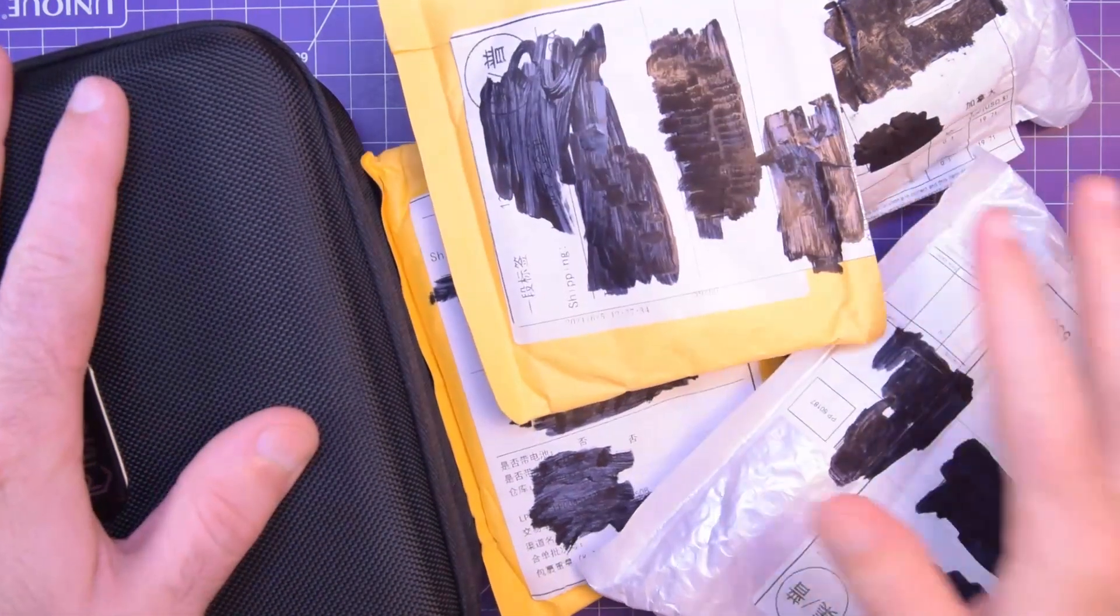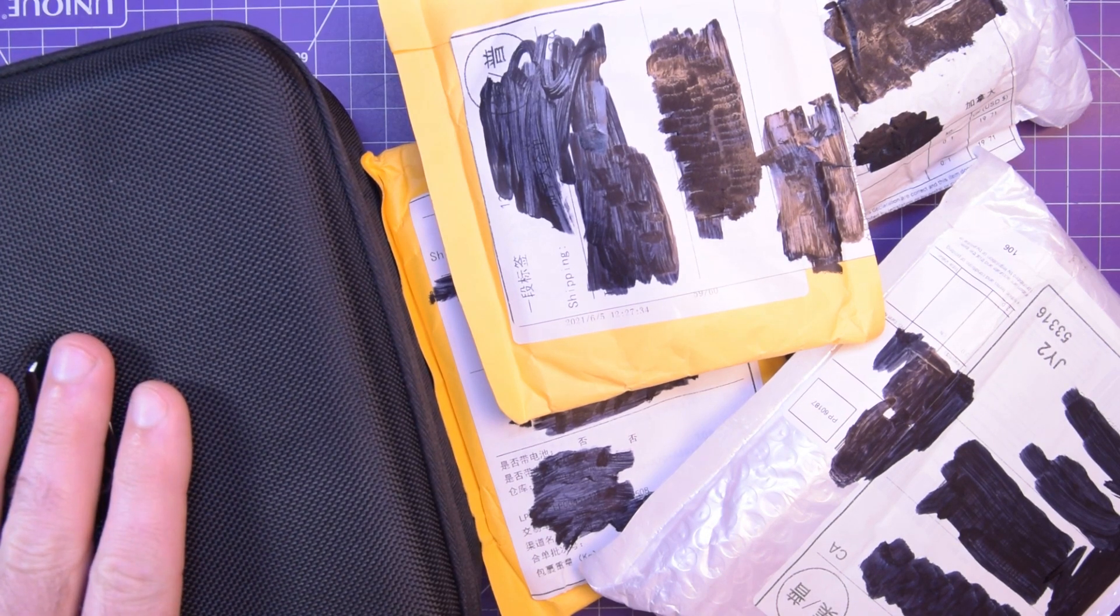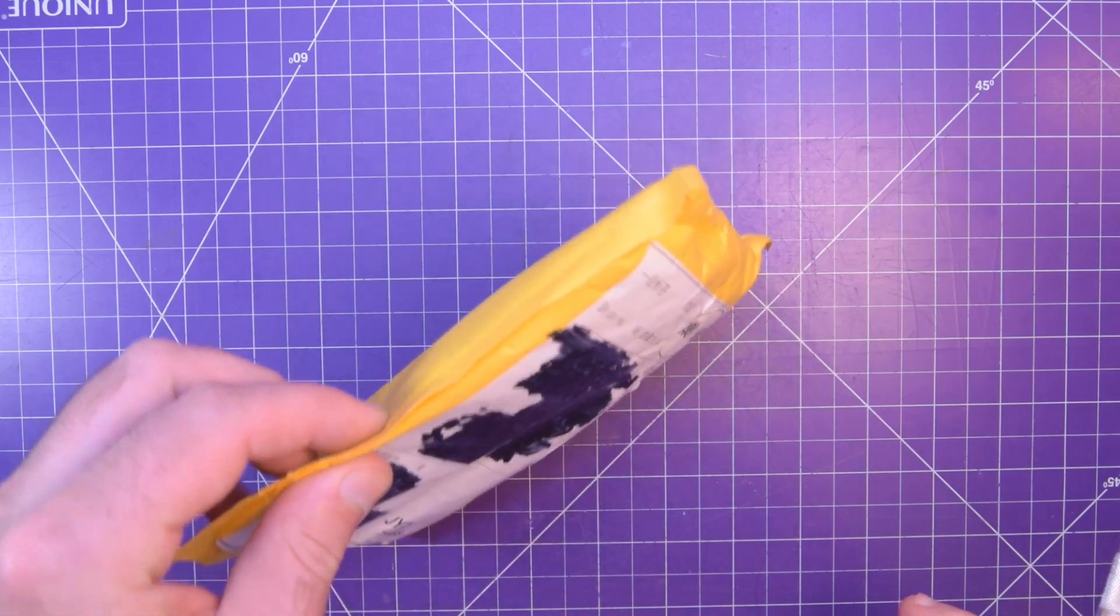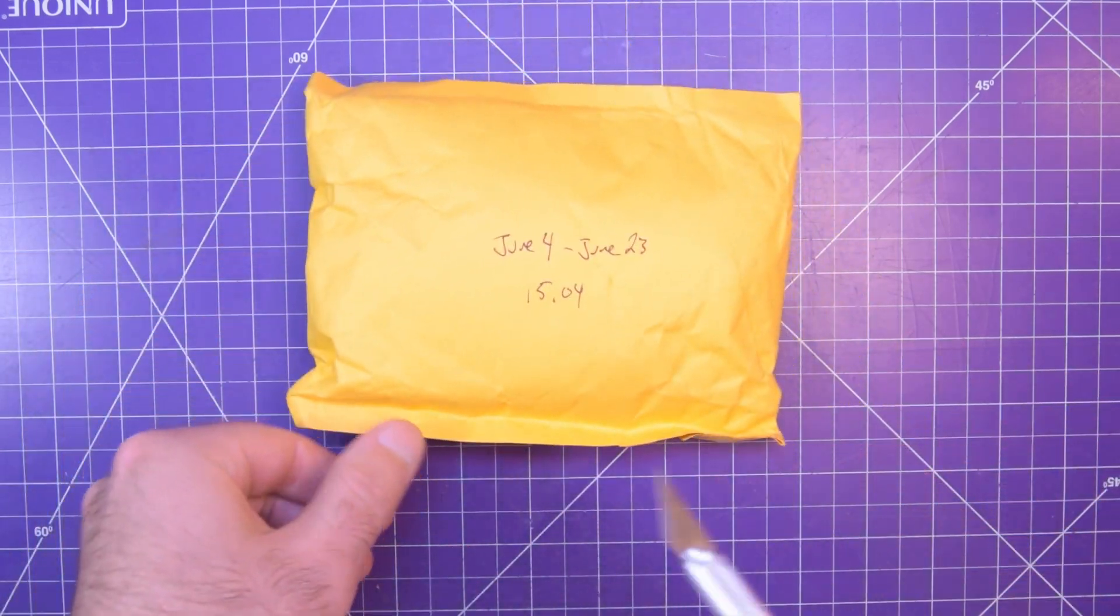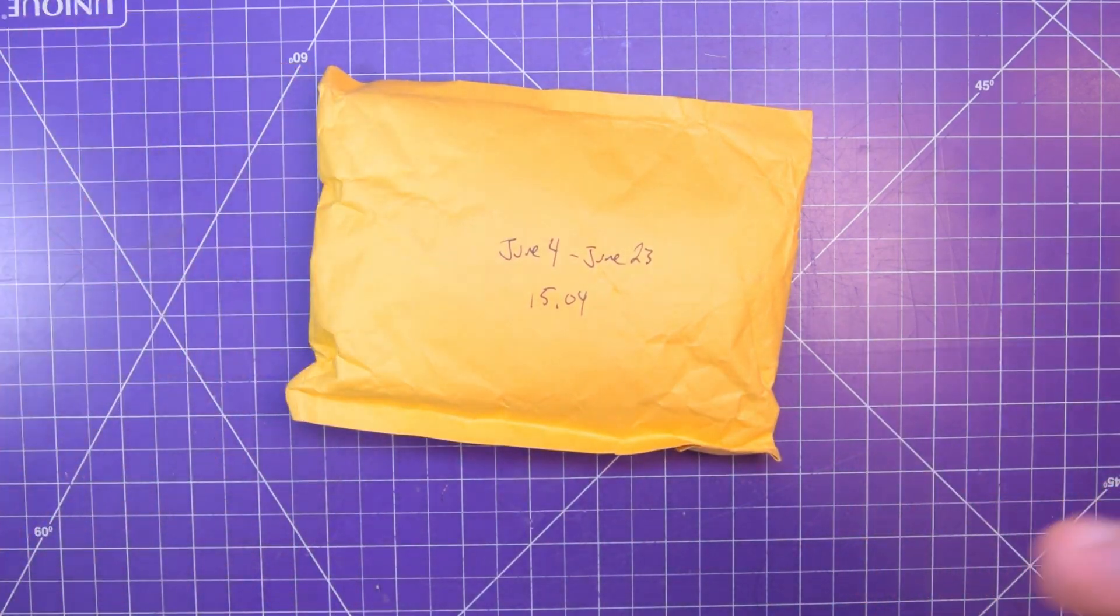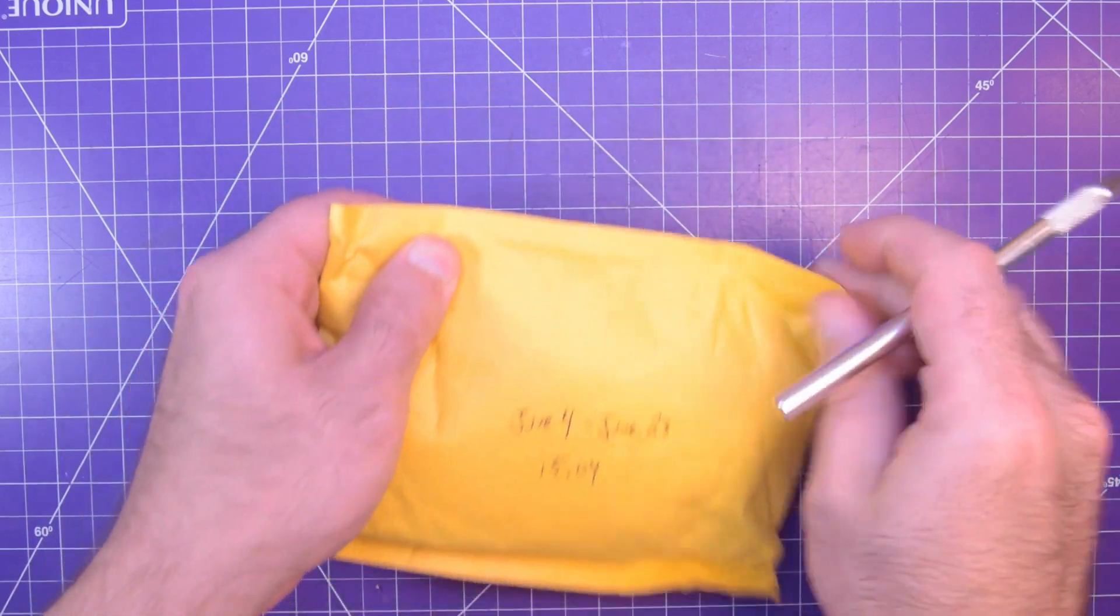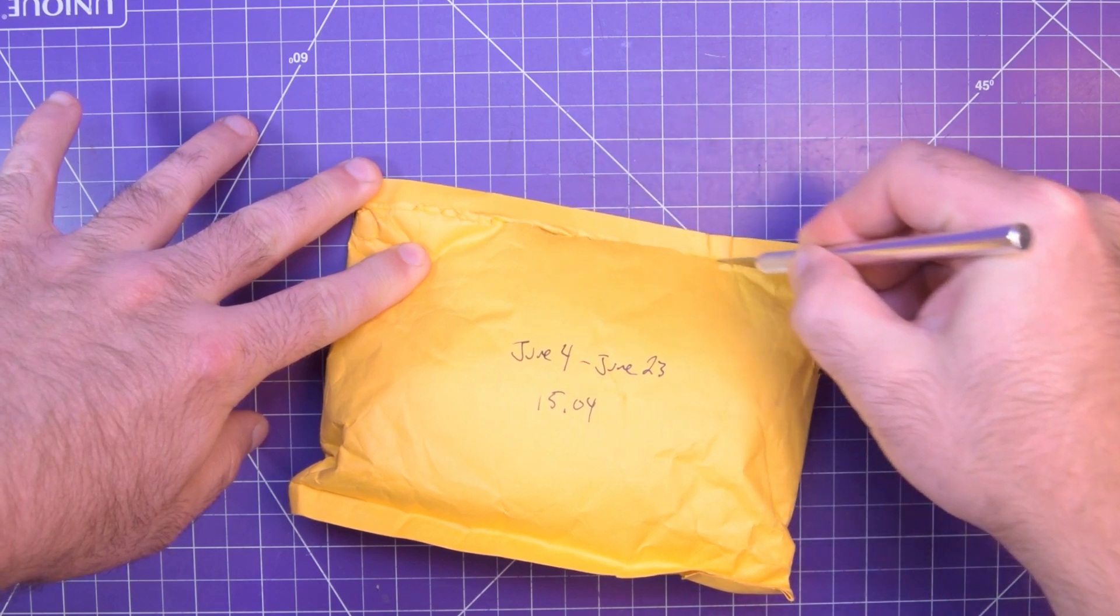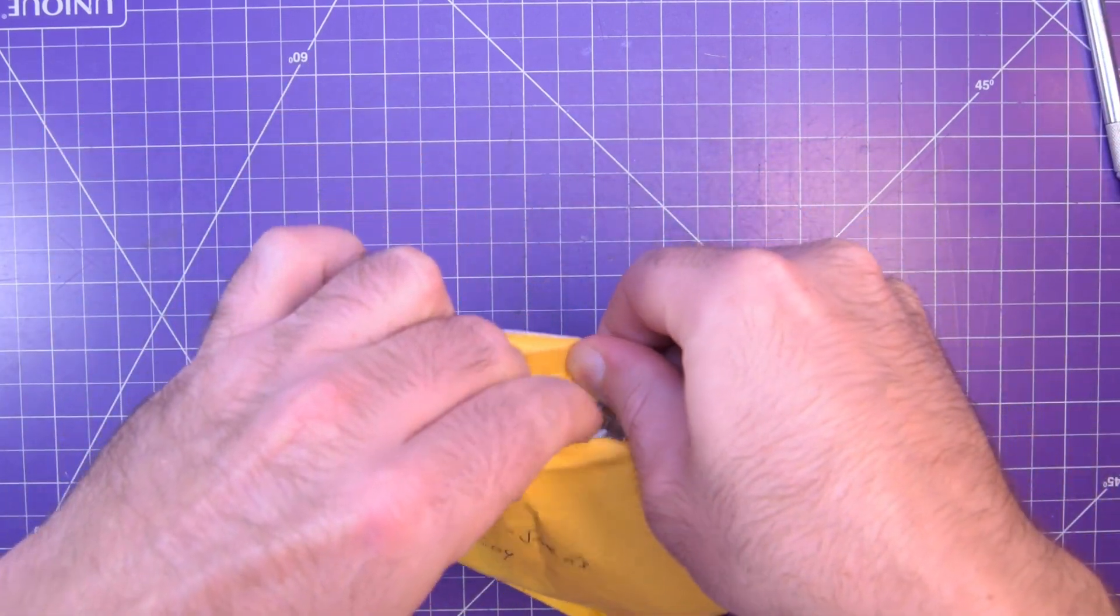I've racked up five mailbag items and so it's time for another mailbag. The tracking numbers for some of these packages were all messed up, so the value amounts might be a little messed up too. They're all ordered on June 4th and arrived June 23rd. My best guess is that this one was $15.04.